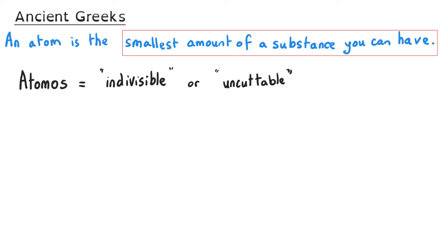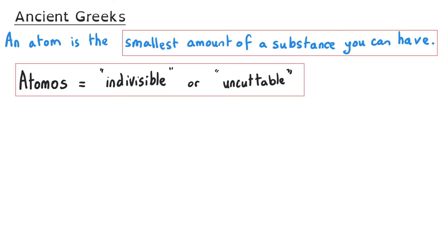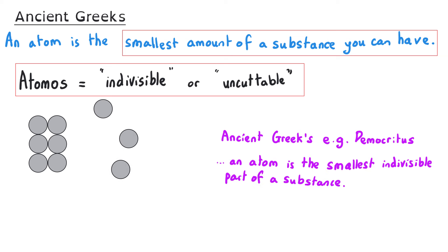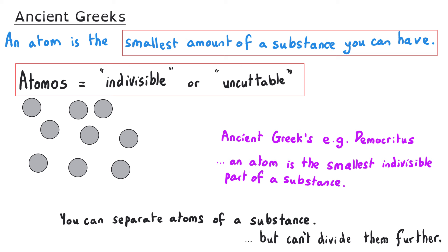The word atom actually comes from the ancient Greek word atomos, which means uncuttable or indivisible, and this reflects the early philosophical idea that an atom was the smallest indivisible particle of matter. This was a concept proposed by a Greek philosopher called Democritus, and this term was later adopted into scientific language and has become the basic unit of a chemical element.